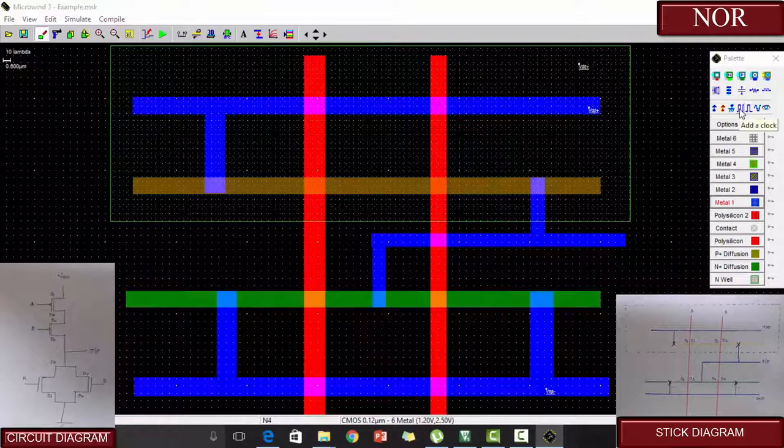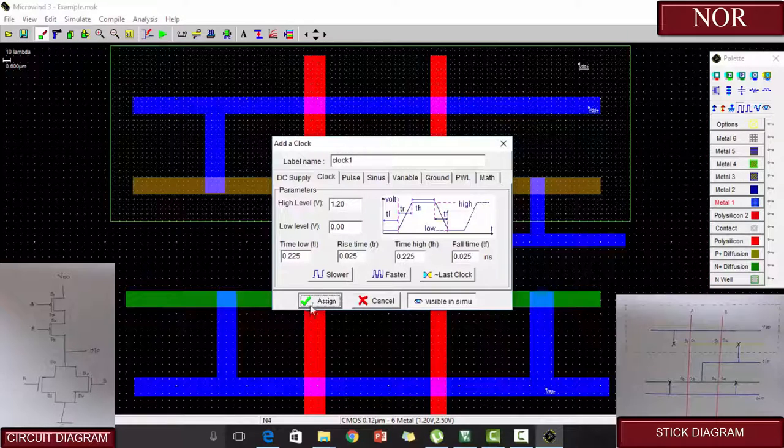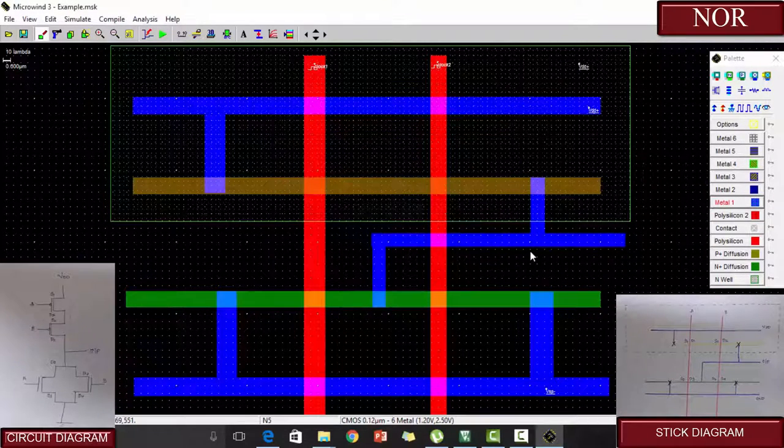Now we are going to apply the inputs. As you know, the inputs are applied at polysilicons. So we assign the clock one, which is A, and then clock two, which is B. These are the two inputs.